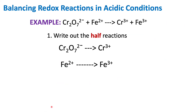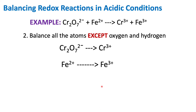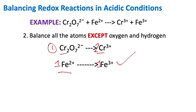Now I've written the half reactions out more clearly. The next step is to balance everything except for oxygen and hydrogen. Looking at half reaction number one, we have two chromiums on one side and one chromium on the other side, so I'm going to add a 2 to balance the chromium — now we've got two chromiums on each side. Looking at our iron half reaction, we have one iron on each side, so it's already balanced.